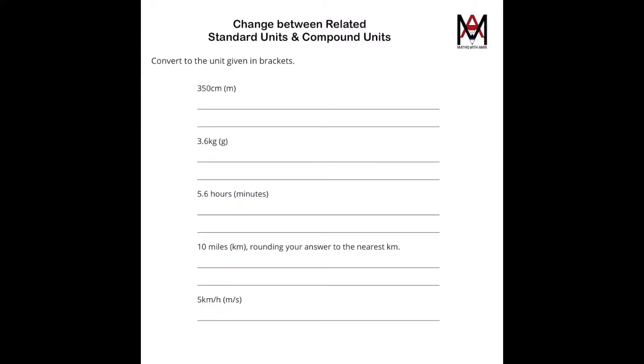Right, 350 centimeters. We know that 100 centimeters equals 1 meter. So 350 centimeters must be, because this is multiplied by 3.5, we multiply this by 3.5. So that's 1 times 3.5, which is 3.5 meters. So this is the answer for this question.